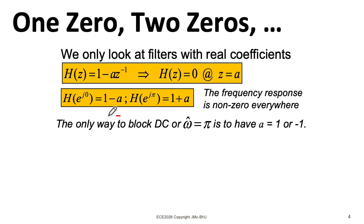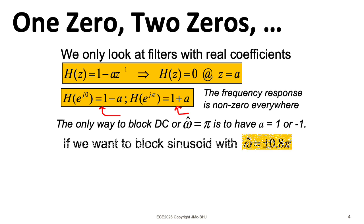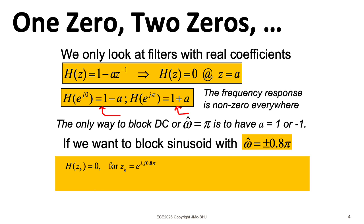If we put the zero at 1, that corresponds to blocking DC, but if you put your zero at minus 1, that corresponds to blocking ω̂ equals π. If you want to think about blocking some frequency other than zero or π, then you need to think about complex conjugate pairs.